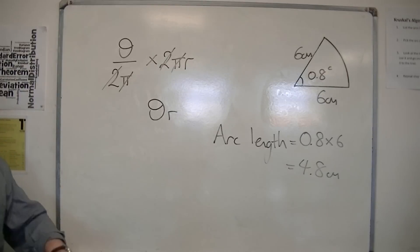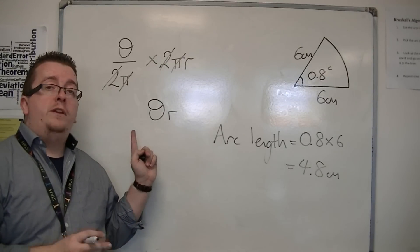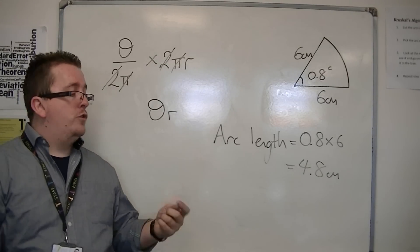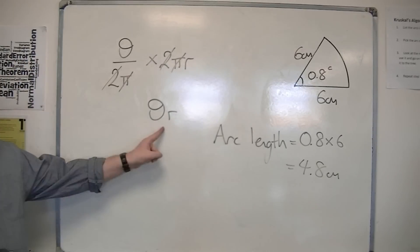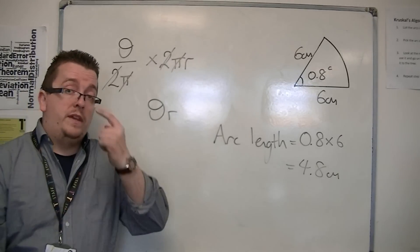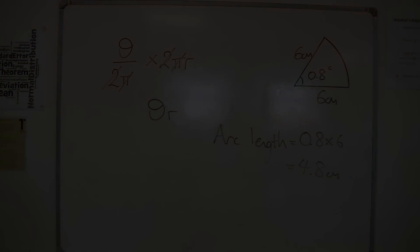And that's it. So this is another of the formulas that you need to learn. You've got half theta r squared for the area of the sector, and theta r for the length of the arc.